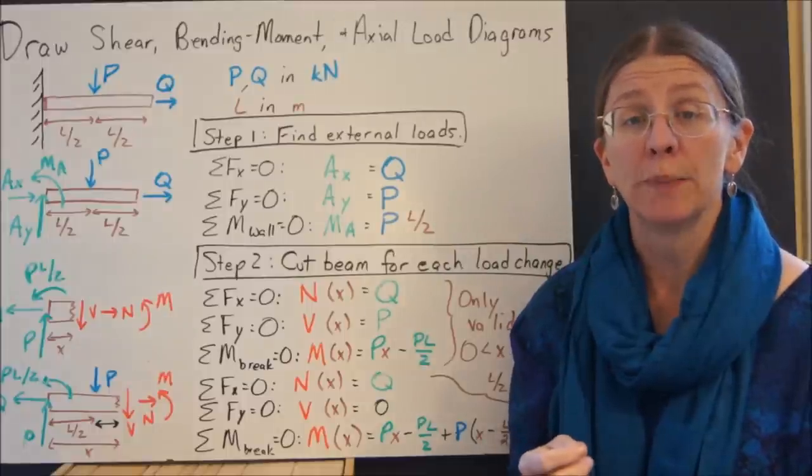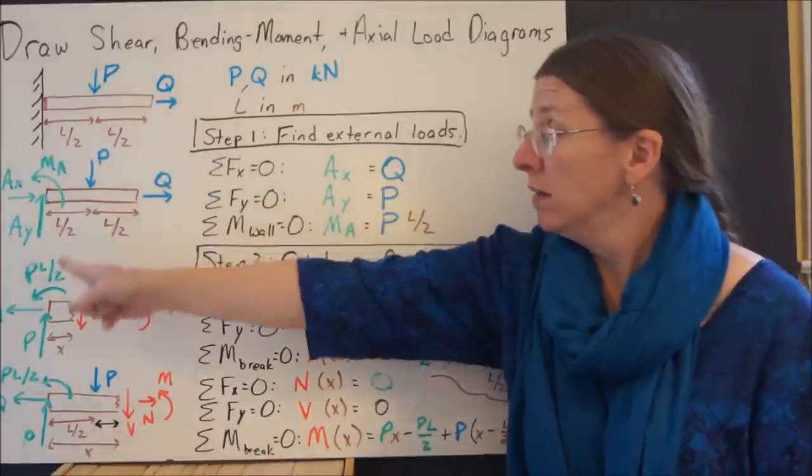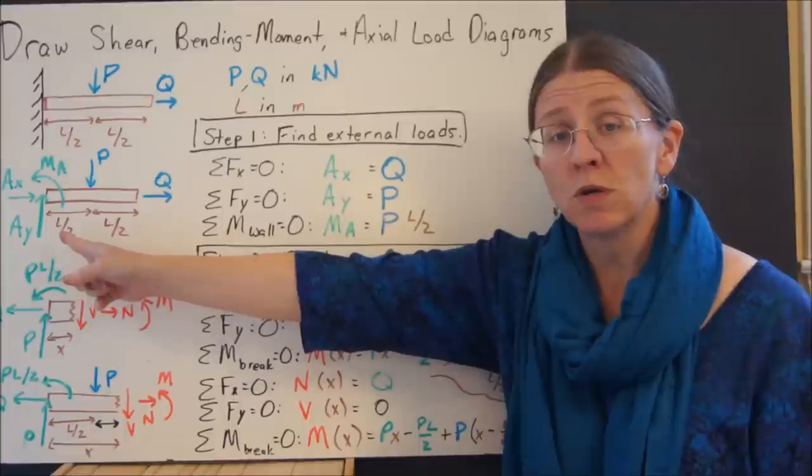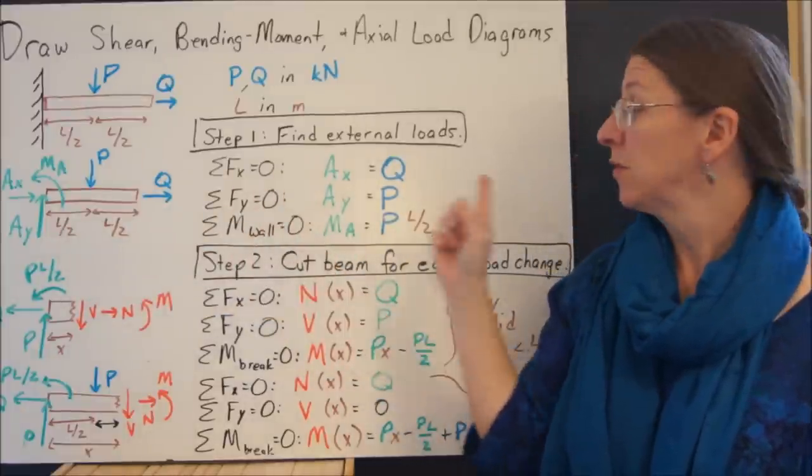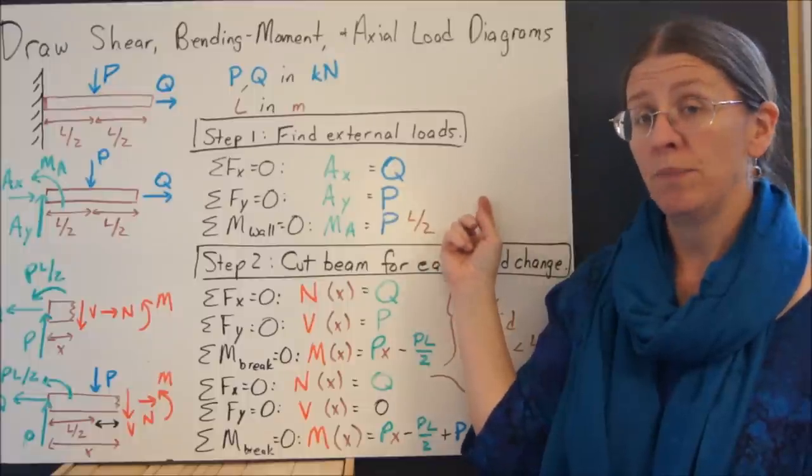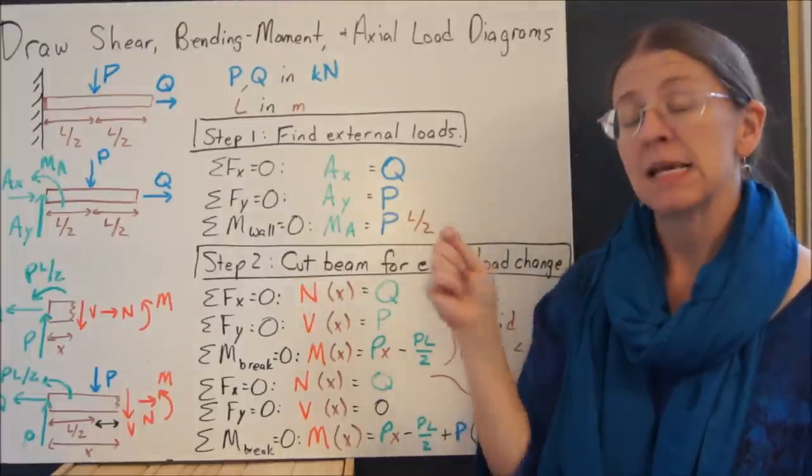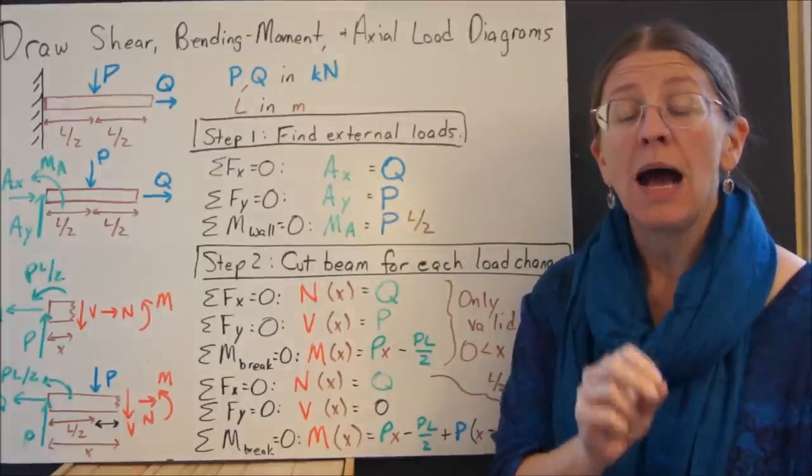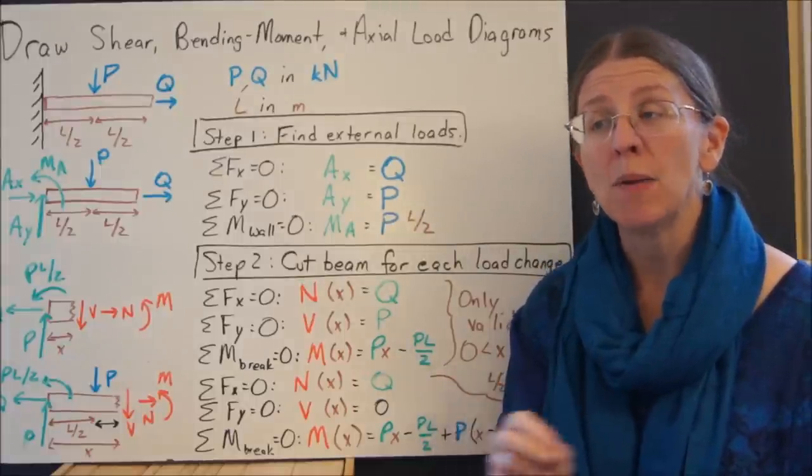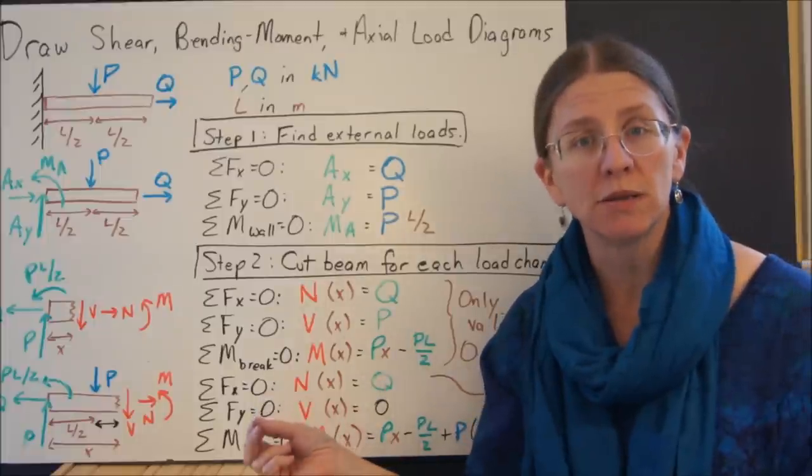Step one is to find the external loads on your beam. I have a wall, replaced it with two forces and a moment. Solve the equations of equilibrium to find out what the loads are at the wall. This is the principle of a shear bending moment diagram by definition.